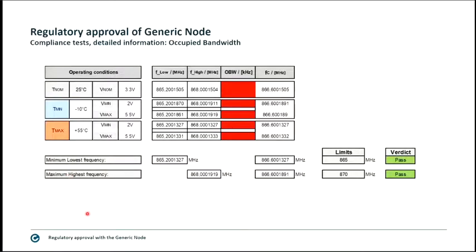Testing is also conducted under different temperatures: T-nominal is 25°C, T-min is -10°C, and T-max is +55°C — specified by the customer for outdoor use. Testing is done across frequencies at minimum voltage (2V), nominal voltage (3.3V), and maximum operating voltage (5.5V). The device must show the same occupied bandwidth and carrier frequency across all conditions. This test was passed.